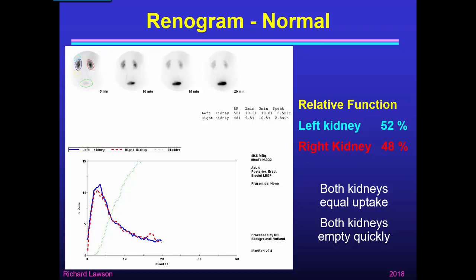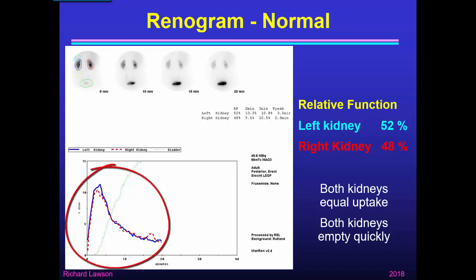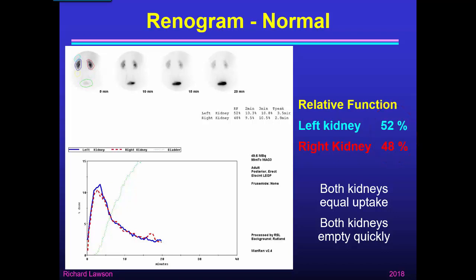If we draw a region of interest in blue around the left kidney, red around the right kidney, and green around the bladder, we can get the computer to tell us how the activity changes with time. Because we've got one image every 20 seconds, we can show minute by minute how the activity in each region of interest changes. At the bottom we've got the curves — the blue curve for the left kidney, the red curve for the right kidney — and you can see these renogram curves rise equally during the first few minutes, representing equal uptake by the two kidneys. The computer calculates that the left kidney is slightly better, having 52% of the patient's total kidney function, whereas the right kidney has 48%.